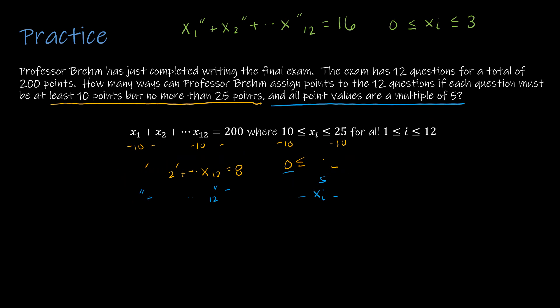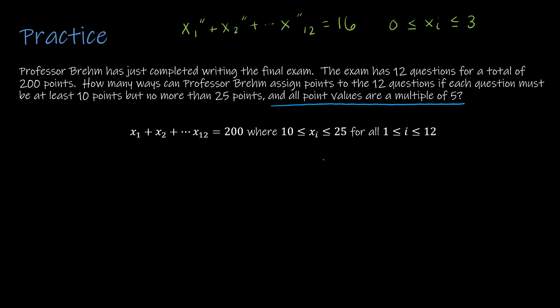Now we find S0 through S4 using PIE. The conditions are ci: xi'' ≥ 4 for each i from 1 to 12. For S0, the total universe: 12 bins and a sum of 16 gives combinations with repetition C(12,16) = C(27,16).